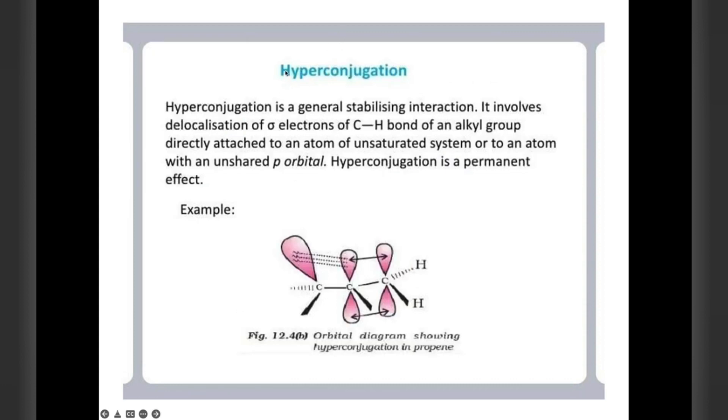Now we have something else known as hyperconjugation. In general, it is a stabilizing interaction which involves delocalization of sigma electrons of C-H bond and of an unsaturated system or to an atom with an unshared P orbital. This is a permanent effect. You can see the hyperconjugation in propene. We will describe this in detail at a later stage. Just remember what is meant by hyperconjugation.